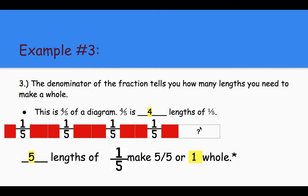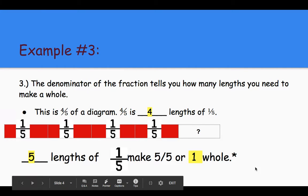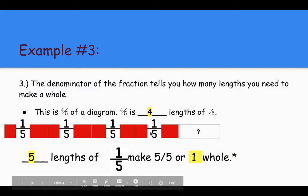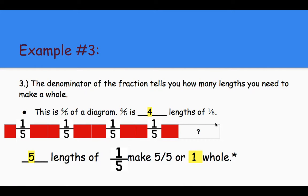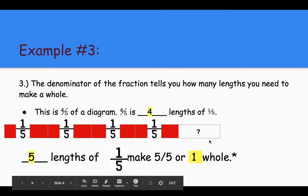And five lengths of one-fifth make five out of five or one whole. So if we added another fifth right here, we'd have our whole, five out of five, or one whole. Awesome. So we see how that works. We have one-fifth, two-fifths, three-fifths, four-fifths, and you would add our five-fifths to make our one whole. Awesome.